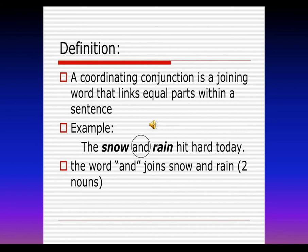If you are asked to define what exactly a coordinating conjunction is, you can write: a coordinating conjunction is a joining word that links equal parts within a sentence. When you divide a sentence into two parts or clauses and want to bring in equality, you use a coordinating conjunction. For example: 'The snow and rain hit hard today.' The function snow plays is the same as rain, so the word 'and' joins these two equal nouns.